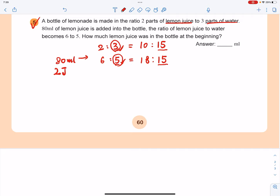And the change to the lemon juice will be that 80 ml, which is from 10 to 18. So that means you add 8 parts. And that 8 parts equals to 80 ml. So that means 1 part equals to 10 ml.